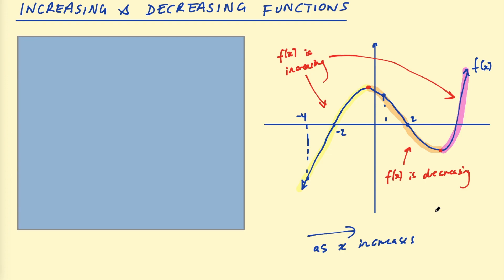So how can we determine if a function is increasing or decreasing? Well, one way to do that is using the derivative of the function, which we've learned about in previous videos. We know this is the tangent at a point on the function. So if we took a tangent in the increasing section, the gradient of that tangent is positive. And if we took a tangent in the decreasing section, the gradient of that tangent is negative. So we can use the derivative f'(x) at a point on the function, in between those intervals, to say whether the function is increasing or decreasing.